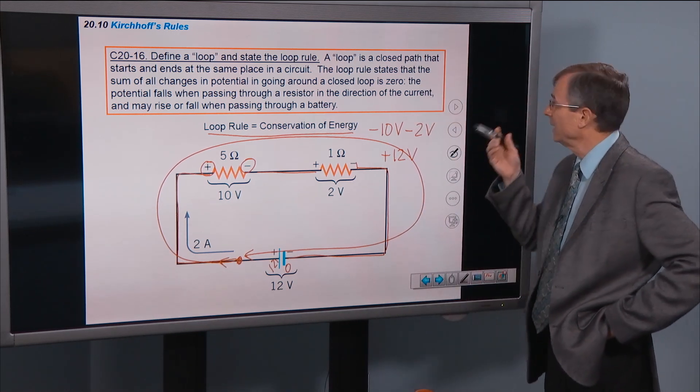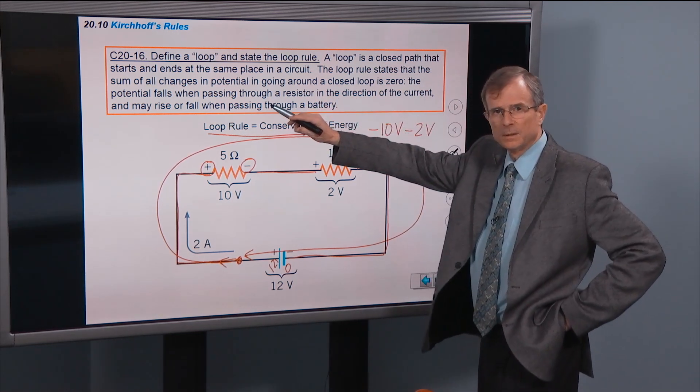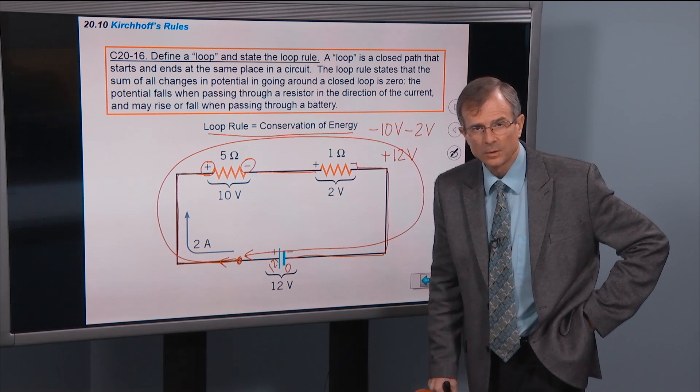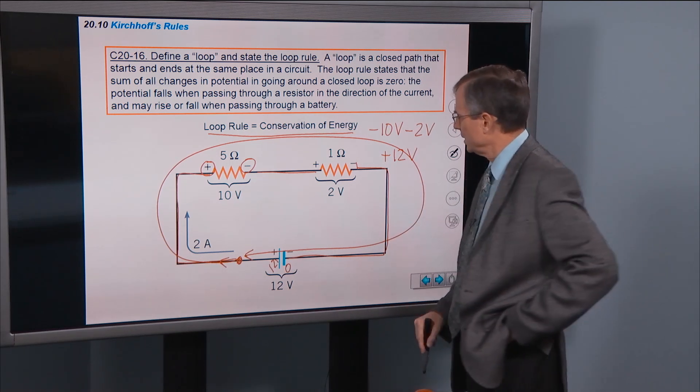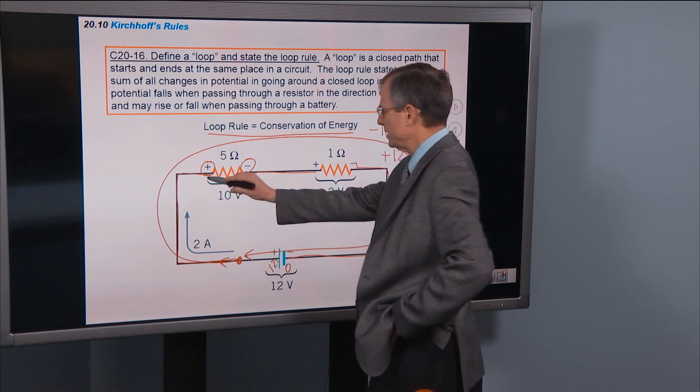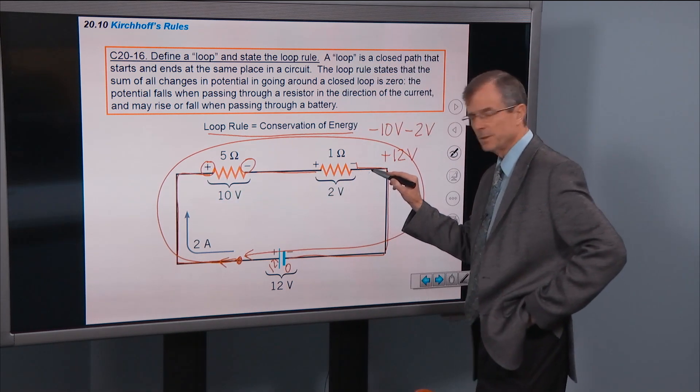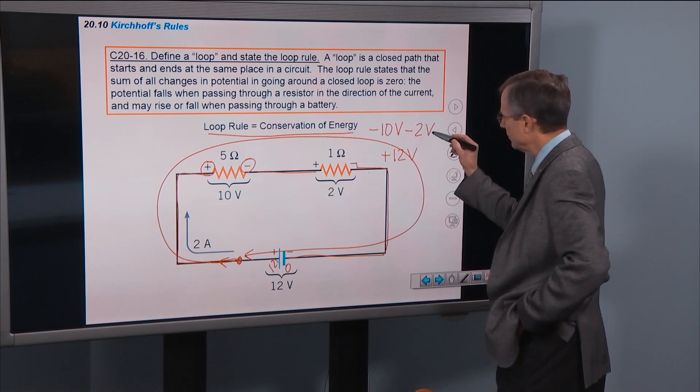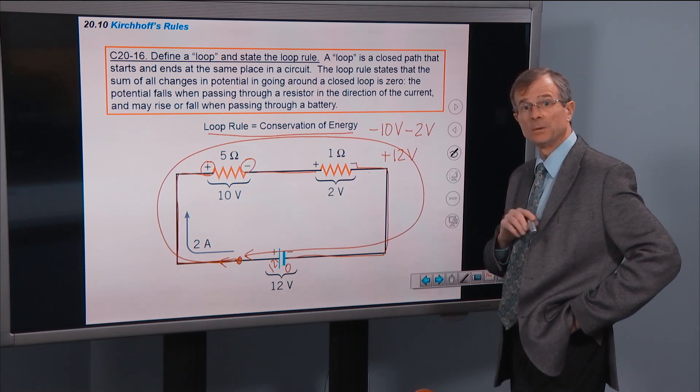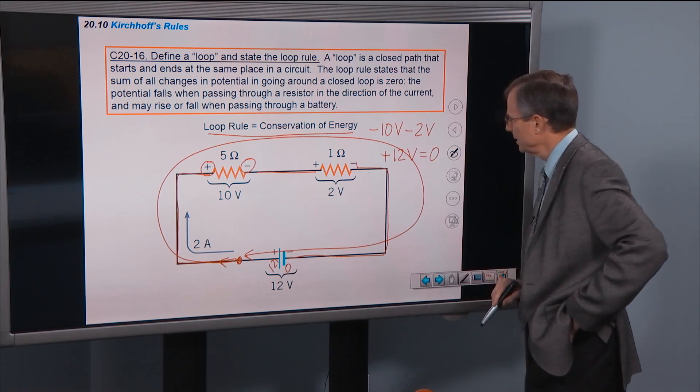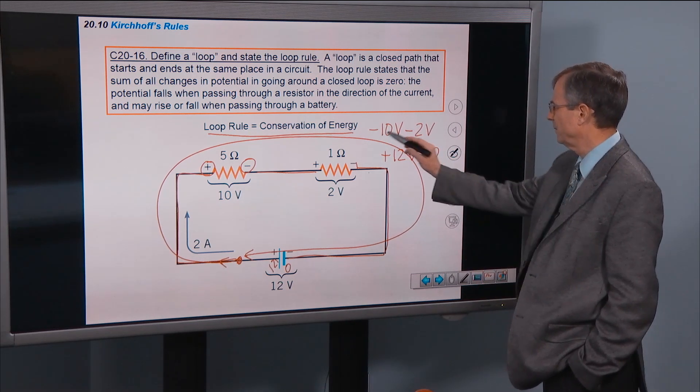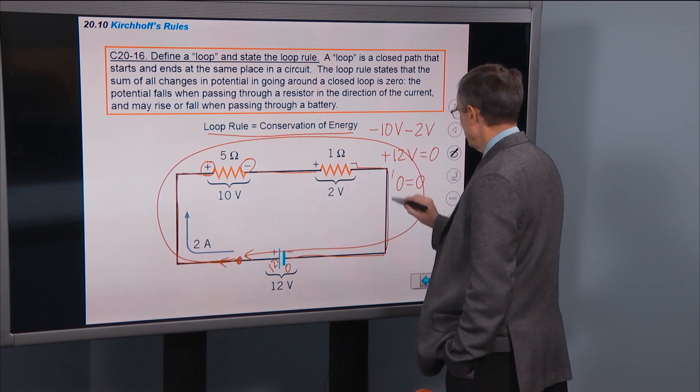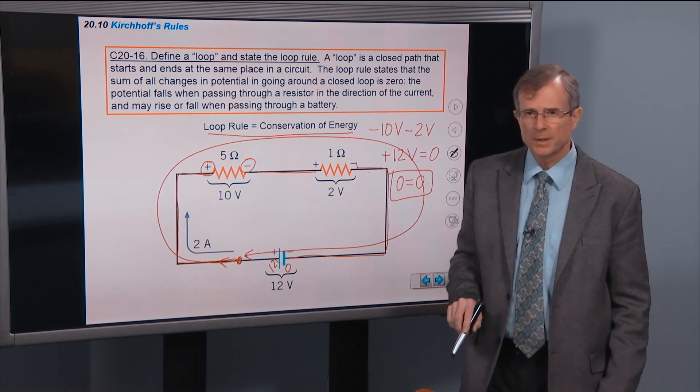Now what does this rule say? It says that the sum of all changes in the potential in going around a closed loop is 0. It's not constant, it's not anything else, it's 0. So I've added up the change, the decrease in potential of 10 volts here, decrease in potential of 2 volts here, and then the increase in potential here of the battery. Minus 10, minus 2, plus 12, what's that supposed to equal? 0. Sum of all the changes is 0. Well is that a true statement? Well sure enough, minus 10 minus 2 is minus 12, plus 12 gives 0, equals 0. And this should be a very satisfying result. 0 should definitely equal 0.